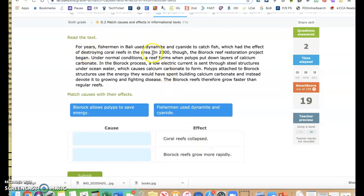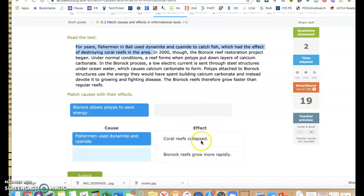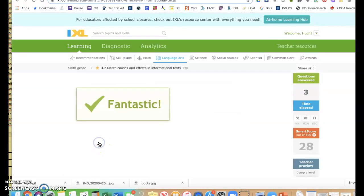So what caused the coral reefs to collapse? This says destroying coral reefs in the area, which would be collapsing. So fishermen use dynamite and cyanide, and that's right here, and that caused those coral reefs to collapse. Let's see if this then makes sense here. BioRock allows polyps to save energy, and they grow more rapidly. BioRock structures use the energy they would have spent building calcium carbonate and instead devote it to growing and fighting disease. The BioRock reefs, therefore, grow faster than regular reefs. So that checks out. Put that there. And there you go.